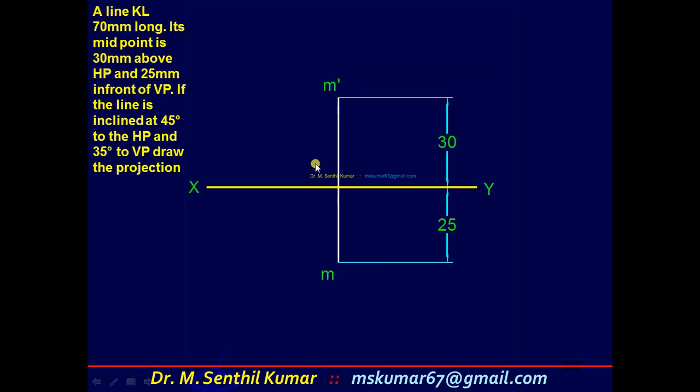The processes are constant. Draw XY line. Mark the midpoint of the line KL. M dash is 30 above M, 25 in front of VP.